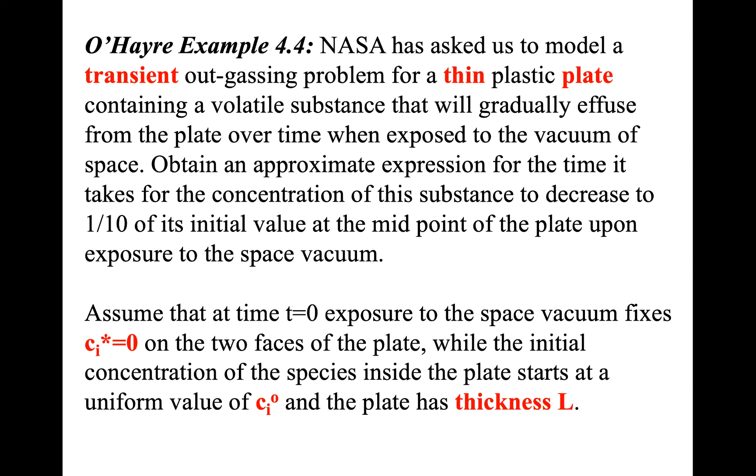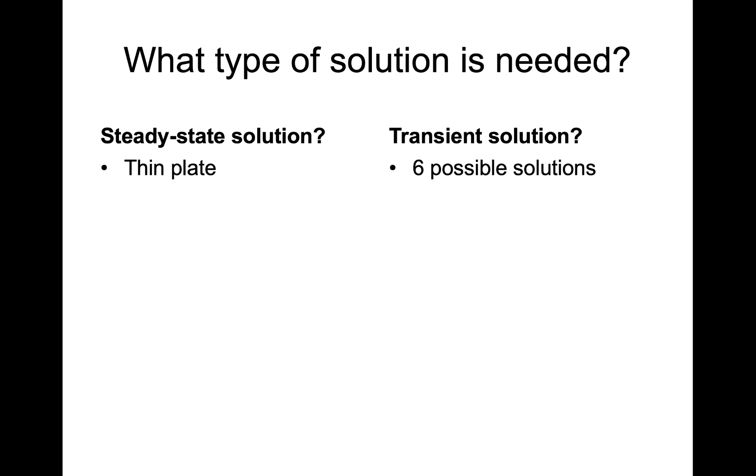Now that we've identified some of the key words in the problem, we need to start thinking through the steps of how to identify which of the possible solutions. So the first thing we should ask ourselves is the question of what type of solution is needed. We can look at steady-state solutions or transient solutions.